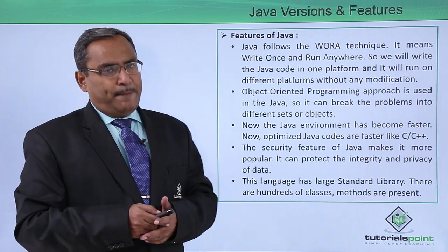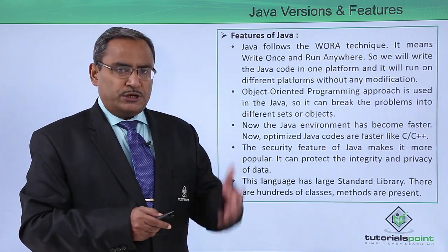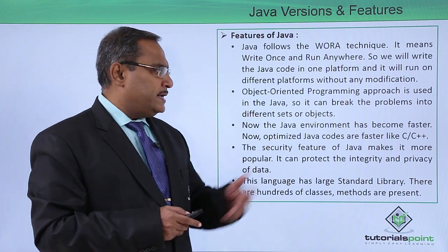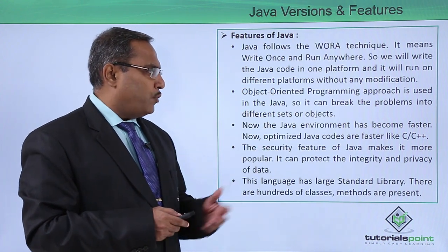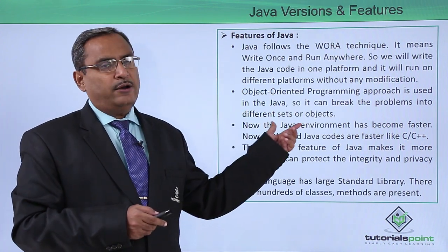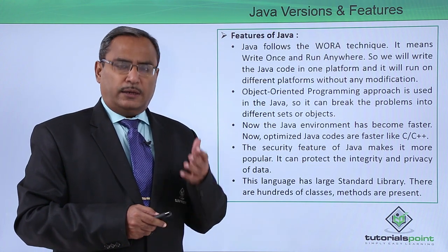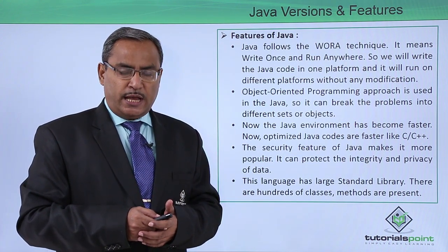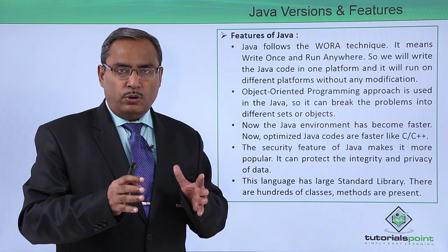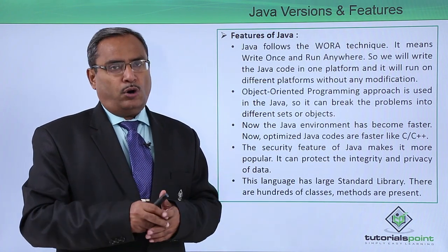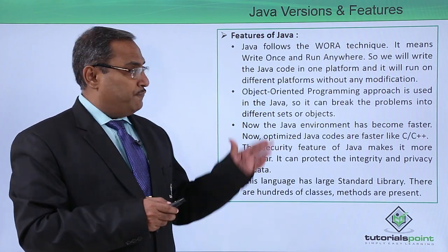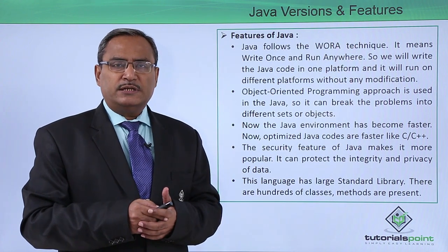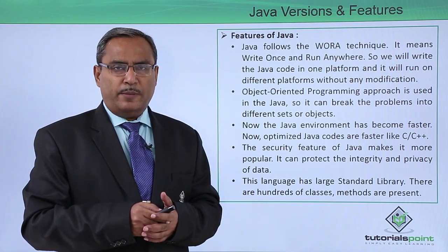Object-oriented programming approach and functional programming features are also used in Java, and it can break problems into different steps and objects. We know that the instance of a class will be known as an object, and an object plays the main role in object-oriented programming. From Java version 1.8 we have lambda functions and other features of functional programming.